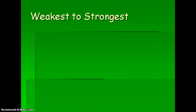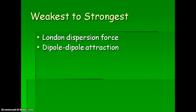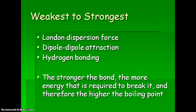Putting them in order from weakest to strongest: the weakest is London dispersion forces — nonpolar molecules creating a temporary dipole. Next strongest is dipole-dipole, for polar molecules. The strongest is hydrogen bonding, when you have a molecule with hydrogen bonded to oxygen, nitrogen, or fluorine. The stronger the bond, the more energy required to break it, and therefore the higher the boiling point. So molecules with hydrogen bonding have higher boiling points than molecules with only London dispersion forces.